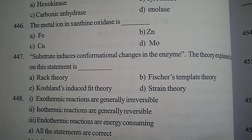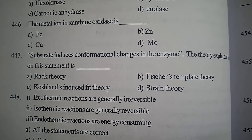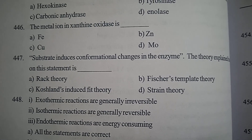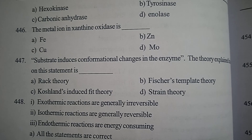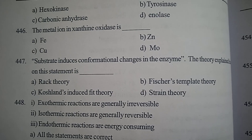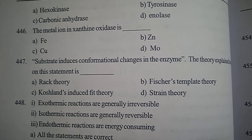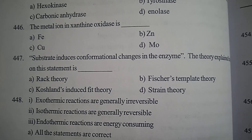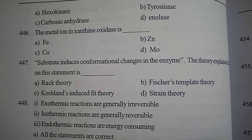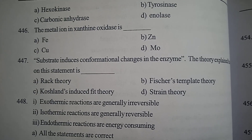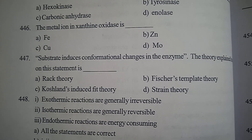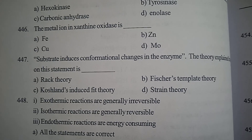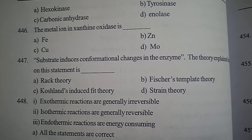Question 1: The metal ion in xanthine oxidase is — Option A: Fe (Iron), Option B: Zinc, Option C: Copper, Option D: Molybdenum. Correct answer: Option D, Molybdenum.